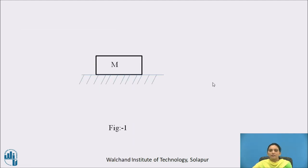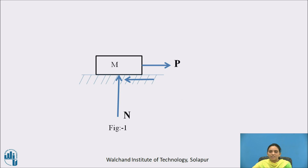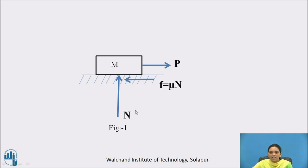Consider a body of mass M with a pulling force P acting on it. The surface offers a normal reaction and there is a frictional force between the surface and the body, equal to the frictional coefficient times the normal. There are three forces acting on the body: P, frictional force, and the normal reaction. We cannot analyze this body using static equilibrium because it is not at rest — it is in motion due to force P.